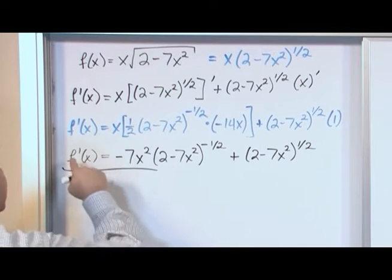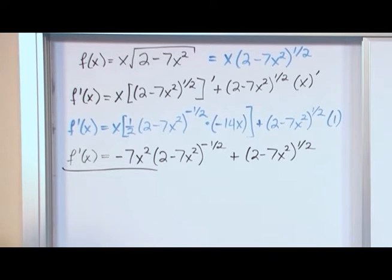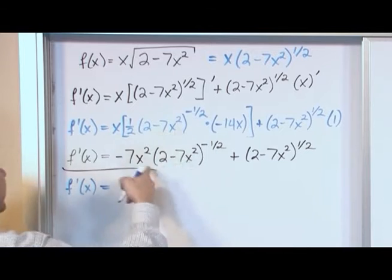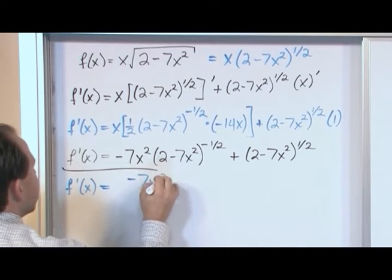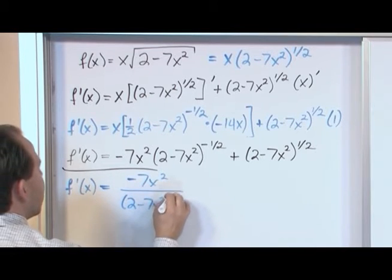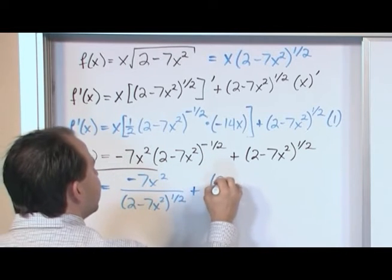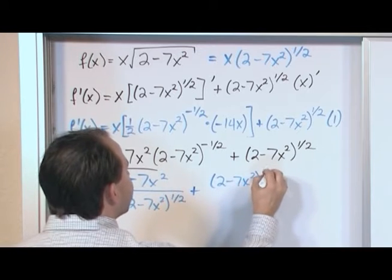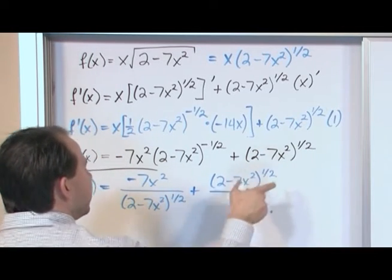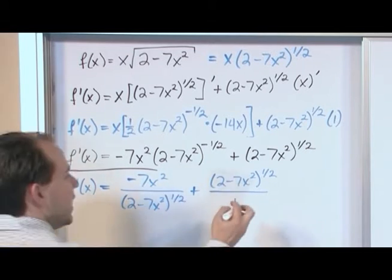Now, truth be told, this is the answer. I mean, it really is. But just like in this course I'm trying to teach you your algebra skills at the same time, there is a way to simplify this that your teacher might like to see a little bit more. So let's go ahead and get some practice with that. Let's rewrite everything: negative 7x squared on the bottom, we're going to have (2 minus 7x squared) to the positive 1/2. Over here you're going to have (2 minus 7x squared) to the 1/2 over 1. Now what we have is two nice terms we would like to add together. So we have to try to find a common denominator.